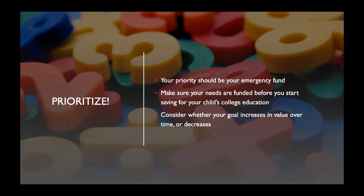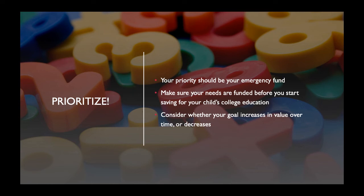Once you have your list of goals, you'll need to prioritize them. My suggestion is that your very first priority should be building your emergency fund — everything else should fall under that. Make sure your own needs are funded before saving for your child's college education. That's a worthy aspiration, but you should get your own financial house in order first.